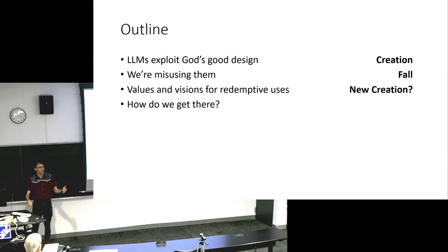So, outline of this talk. First of all, how do these language models work? They work by exploiting God's good design. I mean, exploit in both senses. But we're misusing them. So here is where I'm referencing Joanna's talk, all the ways that we don't use AI. But remember the arc of the biblical narrative: Creation, fall, redemption, new creation. Are there ways that we can use these things redemptively? What might values and visions for that look like? And how do we get there? I'll invite my students to come and join us there.